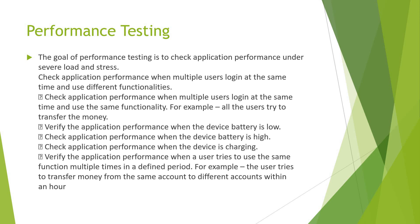Performance testing checklist: check application performance when multiple users log in at the same time using different functionalities. Check performance when multiple users log in and use the same functionality — for example, all users trying to transfer money simultaneously. Verify application performance when the device battery is low or high, and when the device is charging. Verify performance when a user tries to use the same function multiple times in a defined period — for example, transferring money to the same account multiple times within an hour.